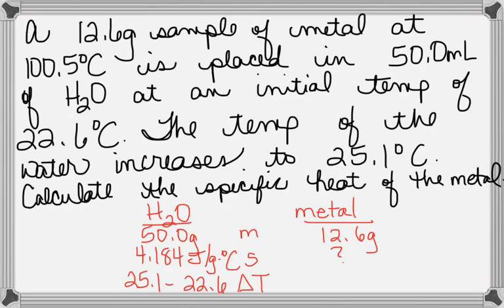Now look, what do you subtract? What's the final temperature of the metal? Or the initial? Do you see that the final temperature is 25.1? Because where is the metal? It's in the water. So the water goes up to 25.1. Don't they become the same temperature? So the final temperature of the metal is 25.1. What's the initial temperature of the metal?